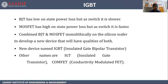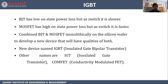Let's start with the next topic: IGBT. BJT has low on-state power loss but is slower as a switch, while MOSFET has high on-state power loss but is faster as a switch. So we combine these two devices — taking low on-state power loss from BJT and fast switching from MOSFET — to form a new device called IGBT: Insulated Gate Bipolar Transistor. Other names are IGT (Insulated Gate Transistor) and CONFET (Conductivity Modulated Field Effect Transistor).